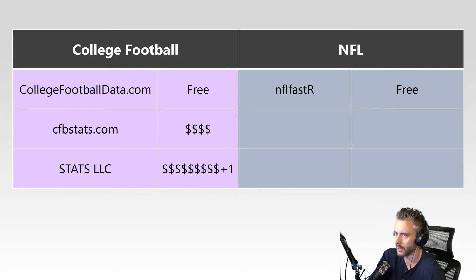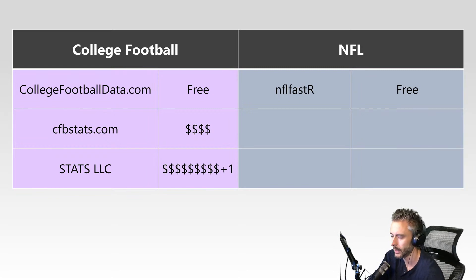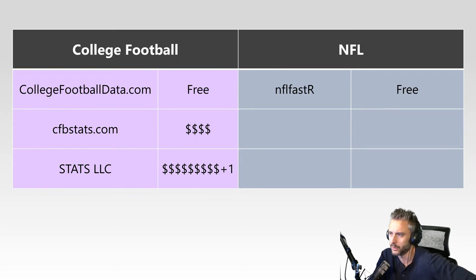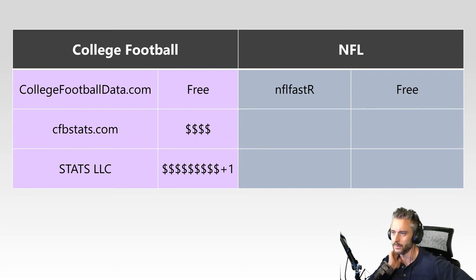There are two free data sources that I'm aware of for both sports. CollegeFootballData.com — it's free, it has an API, it has data exports as CSVs. There's a lot of good stuff on there. You can get drive-level data and play-by-play level data for free. And for a free website, it's very good. It's not perfect — there is some data that's incorrect, some data yet to impute, some errors in the data that you're going to catch when you're doing analysis. But for a free website, it does a very good job.